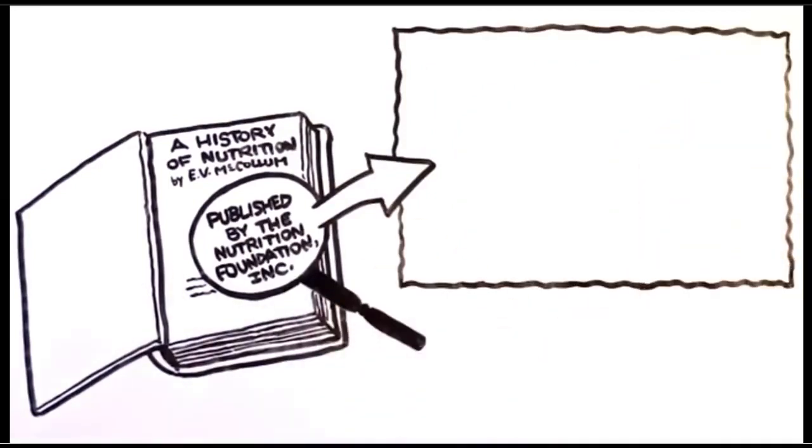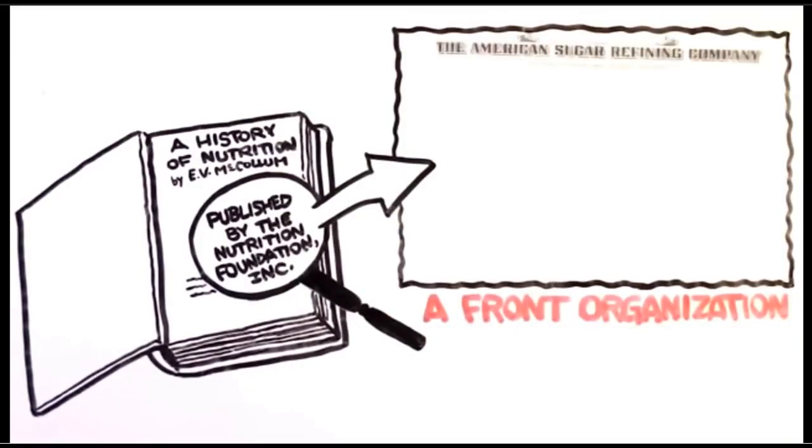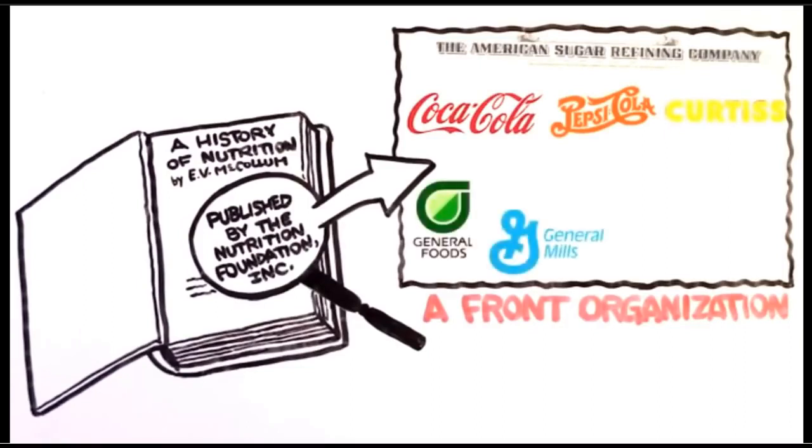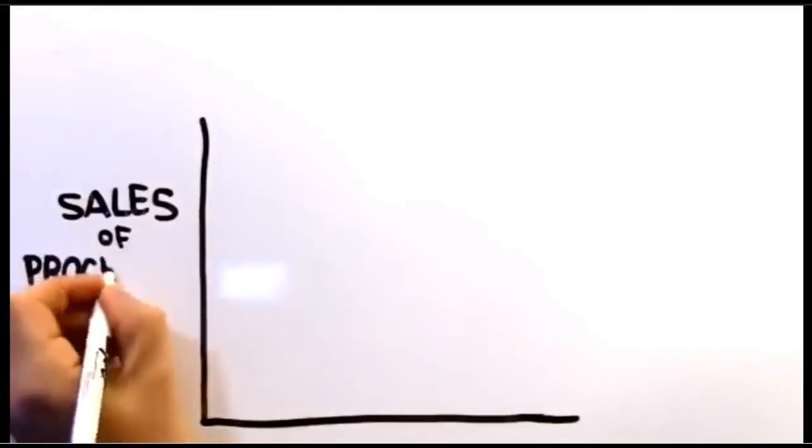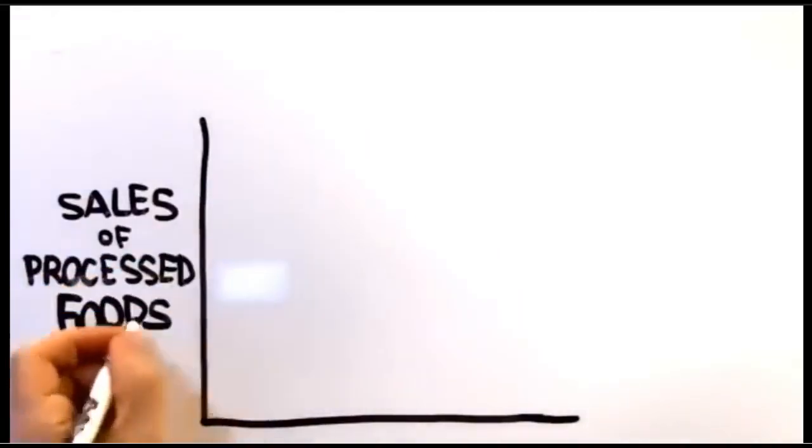Who was the Nutrition Foundation? I'm glad you asked. It happened to be a front organization for the leading sugar conglomerates of the time, including the American Sugar Refining Company, Coca-Cola, Pepsi-Cola, Curtis Candy Company, General Foods, General Mills, Nestle, Pet Milk Company, and Sunshine Biscuits, about 45 companies in all. And did the Americans buy it? Oh boy, did they ever.